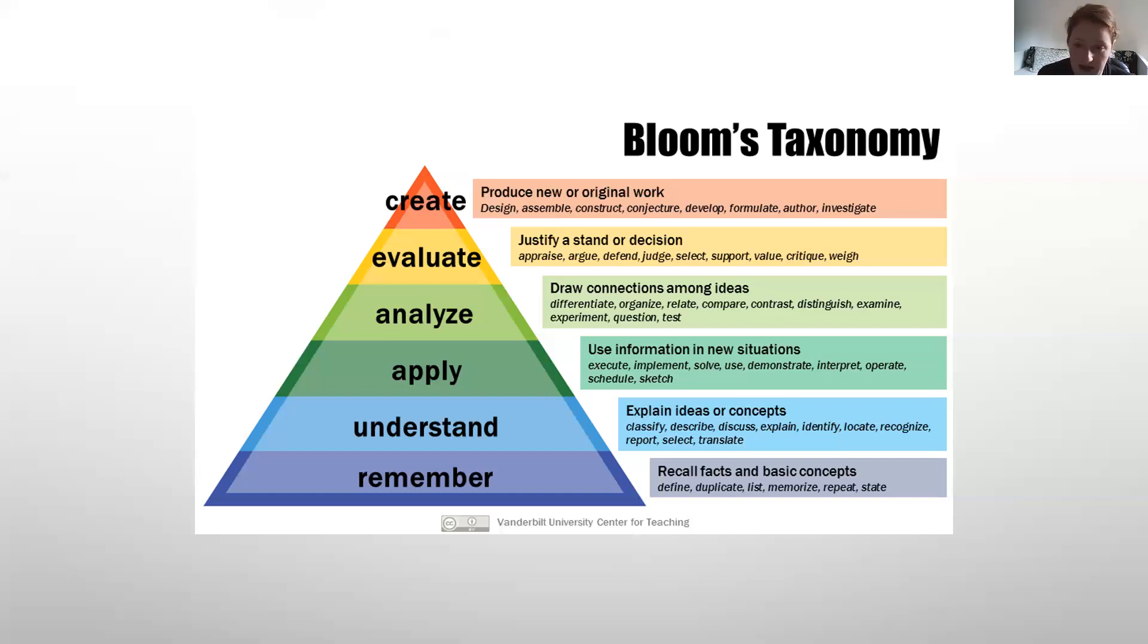The different levels of Bloom's taxonomy. First would be remember. So maybe a test question would be list the items used by Goldilocks while she was in the bear's house. Understanding is explaining why Goldilocks liked baby bear's chair the best. Being able to apply means that you can demonstrate what Goldilocks would use if she came to your house. Analyze, you'd be able to compare the story to reality. What events could not really happen. Evaluating, you'd be able to judge whether Goldilocks was good or bad and be able to defend your position. And then finally create. Writing a story about Goldilocks and the three fish. How would it differ from Goldilocks and the three bears? Those are the different levels of Bloom's taxonomy and how an instructor might try and push you to those different levels.